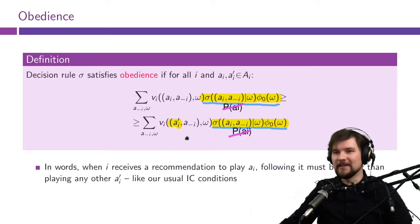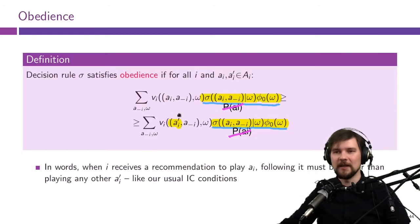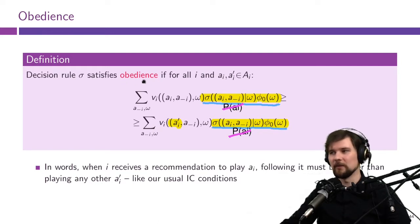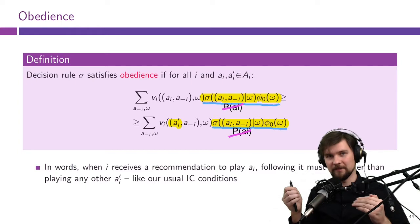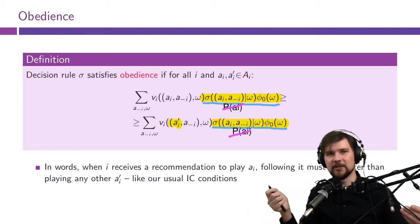To distinguish this from standard incentive compatibility, we call it the obedience constraint — the players will behave as we ask them to. Do players know what recommendations all other players receive? The answer is no — players only see their own recommendation and from that infer what recommendations others could have received.